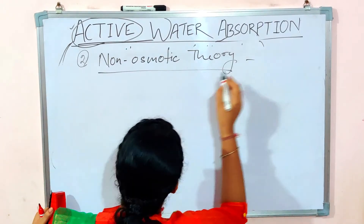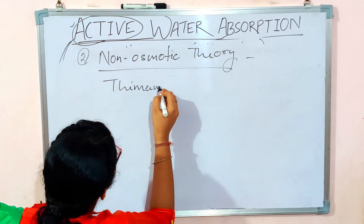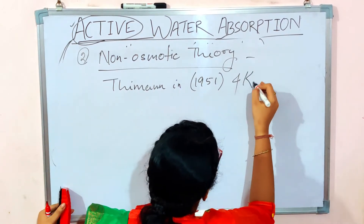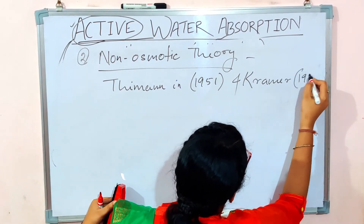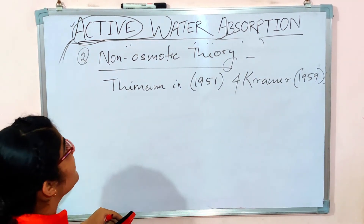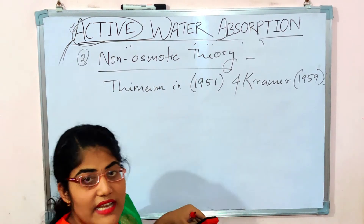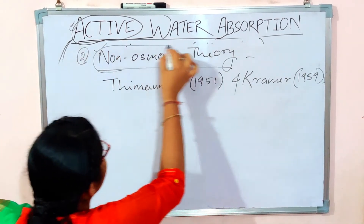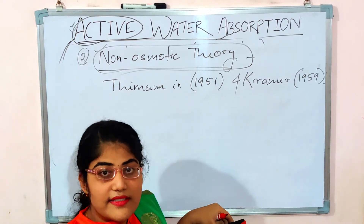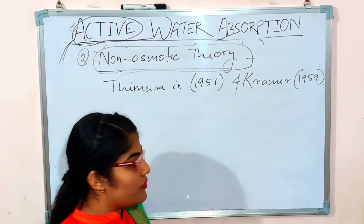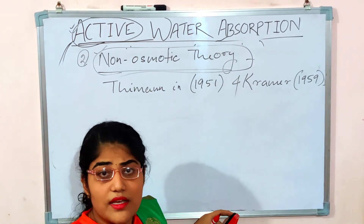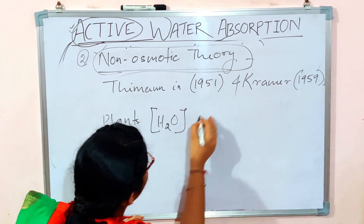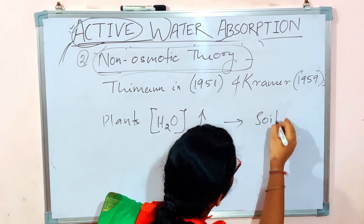The non-osmotic theory was first proposed by Thiemann in 1951 and Cramer in 1959. According to this theory, active water absorption may also take place via a non-osmotic pathway. This pathway is mainly found in plants that show a low rate of transpiration. When transpiration is reduced, the water content inside the plant is comparatively high compared to the soil water.